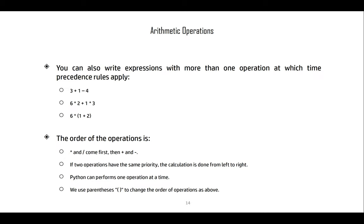You can also write expressions with more than one operation, and precedence rules will apply. For instance, 3 + 1 - 4 = 0, 6 × 2 + 1 × 3 = 15, and 6 × (1 + 2) = 18. Parentheses are the highest precedence operator. Multiplication and division come before plus and minus. If two operations have the same priority, calculation is done from left to right.